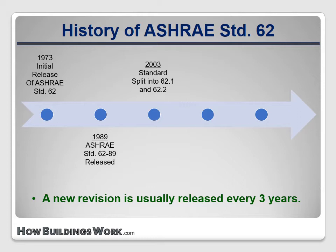In 2007, they released a version that shifted away from the philosophy of 0.35 air changes or 15 CFM per person, to a calculation method that combines the number of occupants and the floor area into a single equation to determine the required ventilation rate.